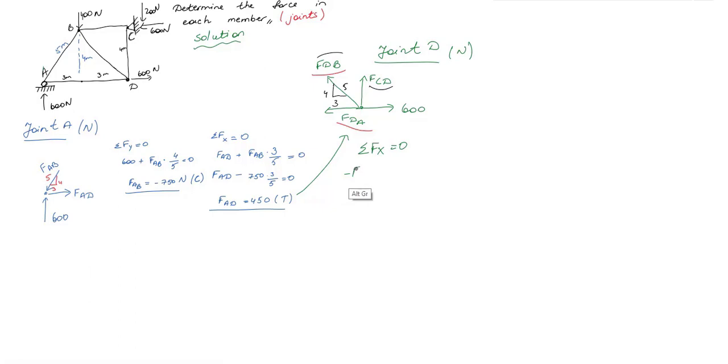I have minus FDA, positive 600, and x component of FDB which is equal to FDB times 3 over 5. I've already found FDA, and from this I get FDB as 250 Newton. As it is positive, it is tension.